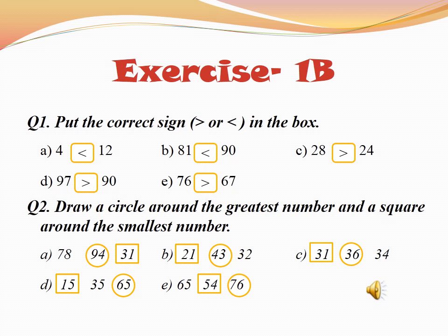In part E, we have 65, 54, and 76. Which is the smallest number? 54 is the smallest, so draw a square around 54. And which is the greatest? 76 is the greatest number, so draw a circle around 76. Parts F, G, H, and I — do by yourself.